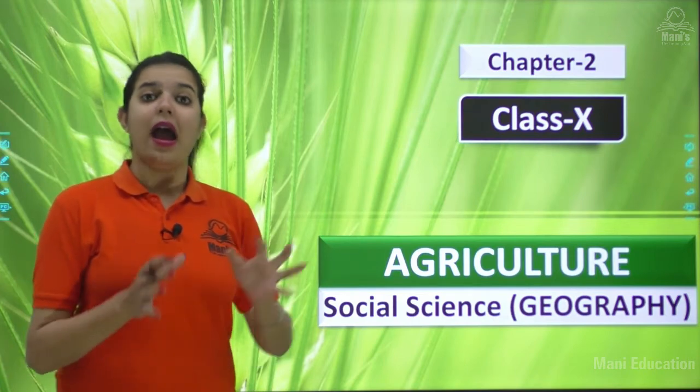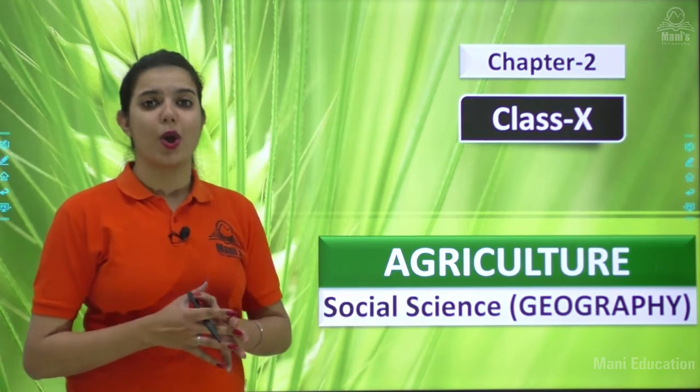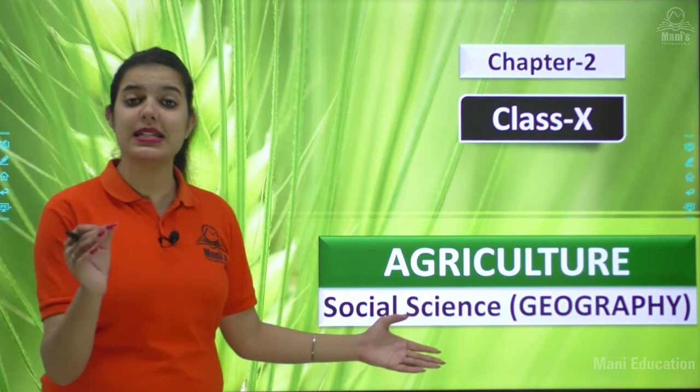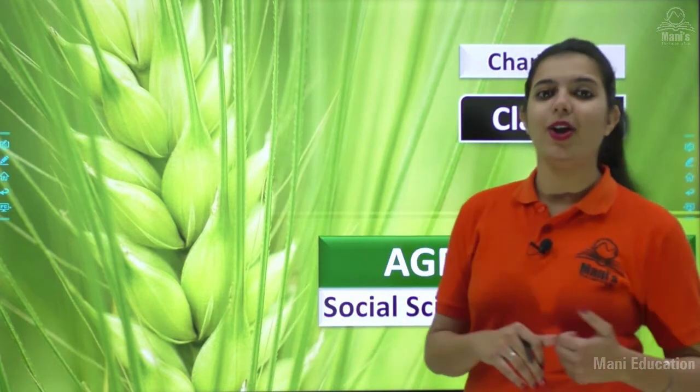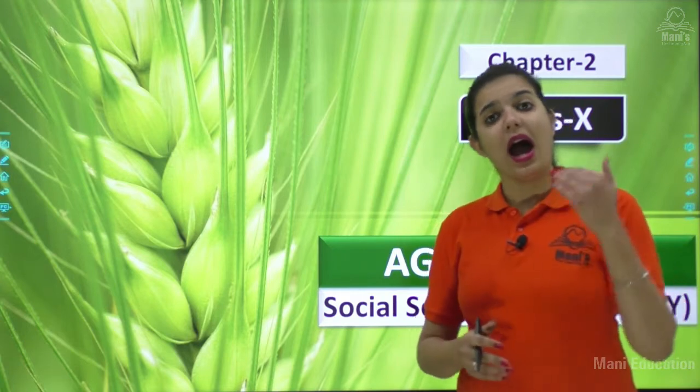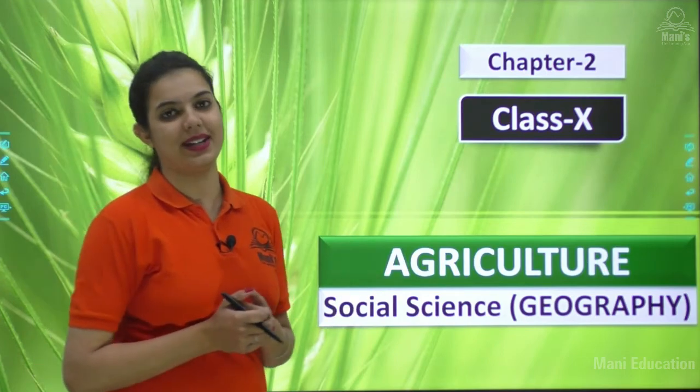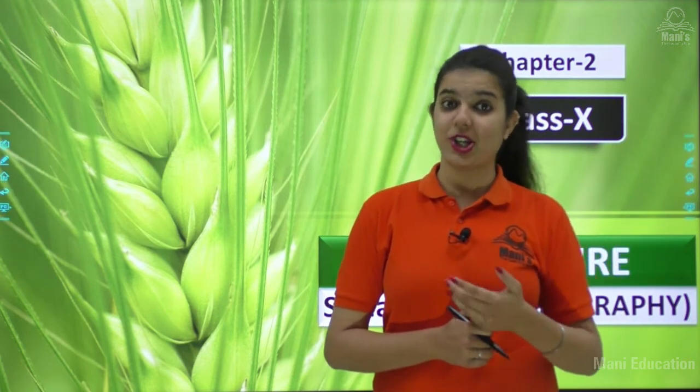Why is this chapter so important for us? Why are we studying agriculture? Why has it been included in our syllabus? Because agriculture is the main source of occupation of the people of our country, specially in rural areas. Still, more than half of the people of our country depend on agriculture for their livelihood. So agriculture is an age-old economic activity — it is not a new phenomenon. For the past 8000 years we have been practicing agriculture.